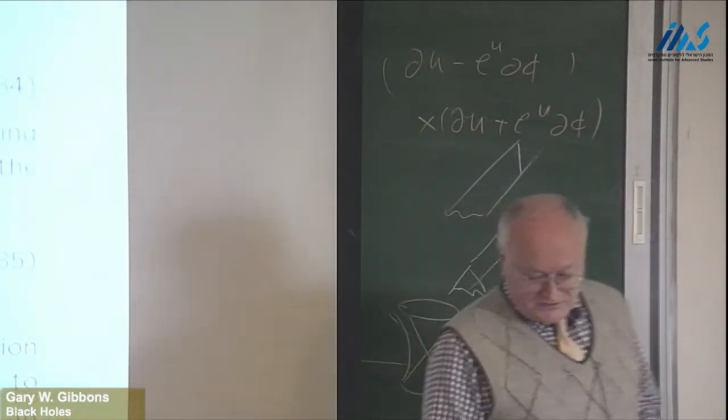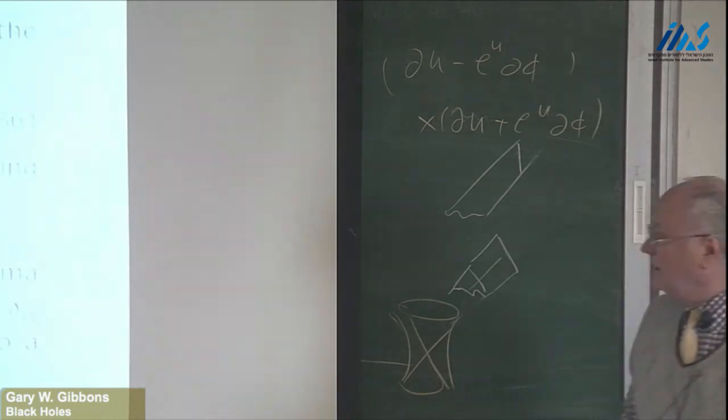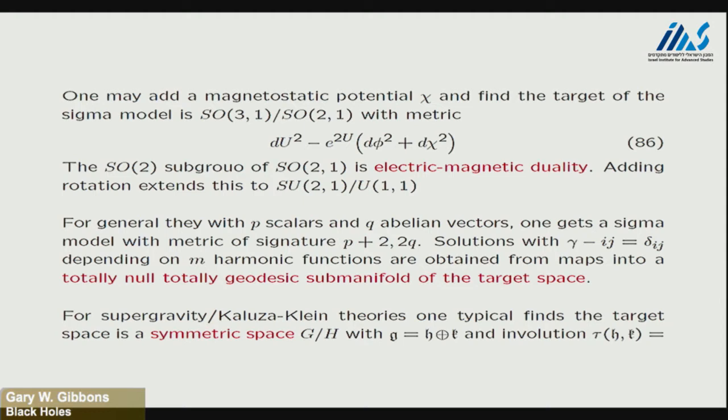In general, if you can find a totally geodesic, totally null sub-manifold, then you can find multi-solutions. And it's usually easy to find them, but that actually turns out to be a nice Lie algebra question. Okay. Let's see. I wrote that down here somewhere. Yeah, these multi-solutions are obtained from totally null, totally geodesic sub-manifolds of the target space. And that's a true statement irrespective of what the metric is. But, you know, for privileged theories that target space is very special. And in particular for supergravity or Kaluza-Klein theories, it's typically a symmetric space. It's of the form G over H, where G is, the Lie algebra is the direct sum of G plus K, and there's an involution which reverses K but not H. And so the commutation relations are invariant under this.